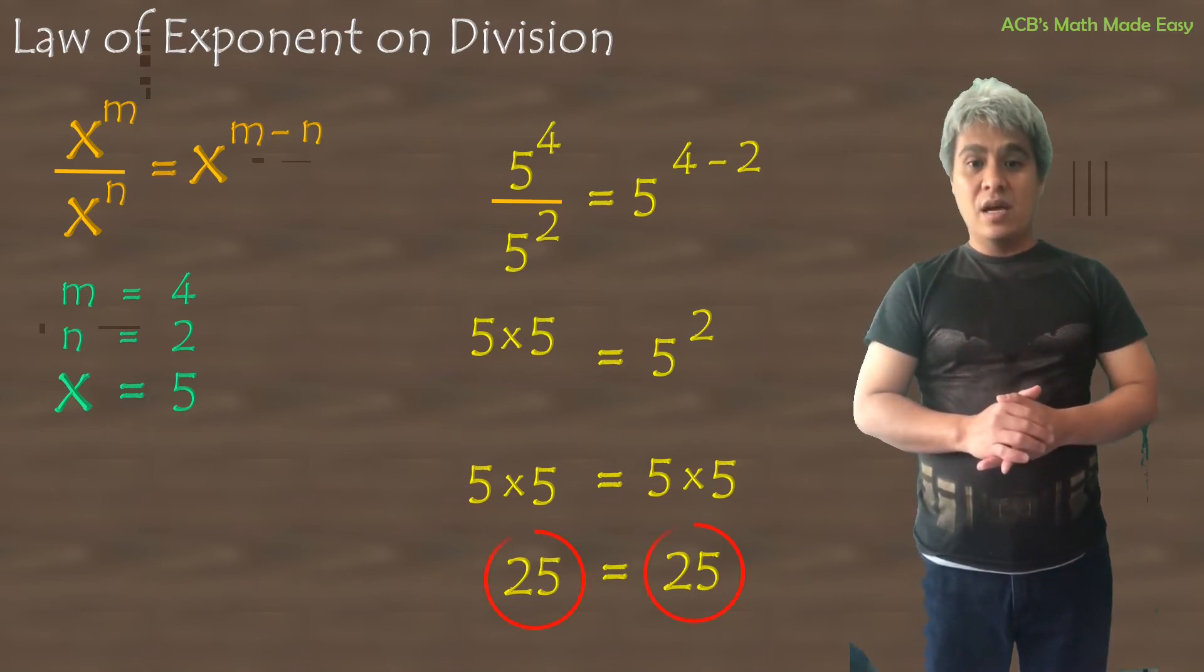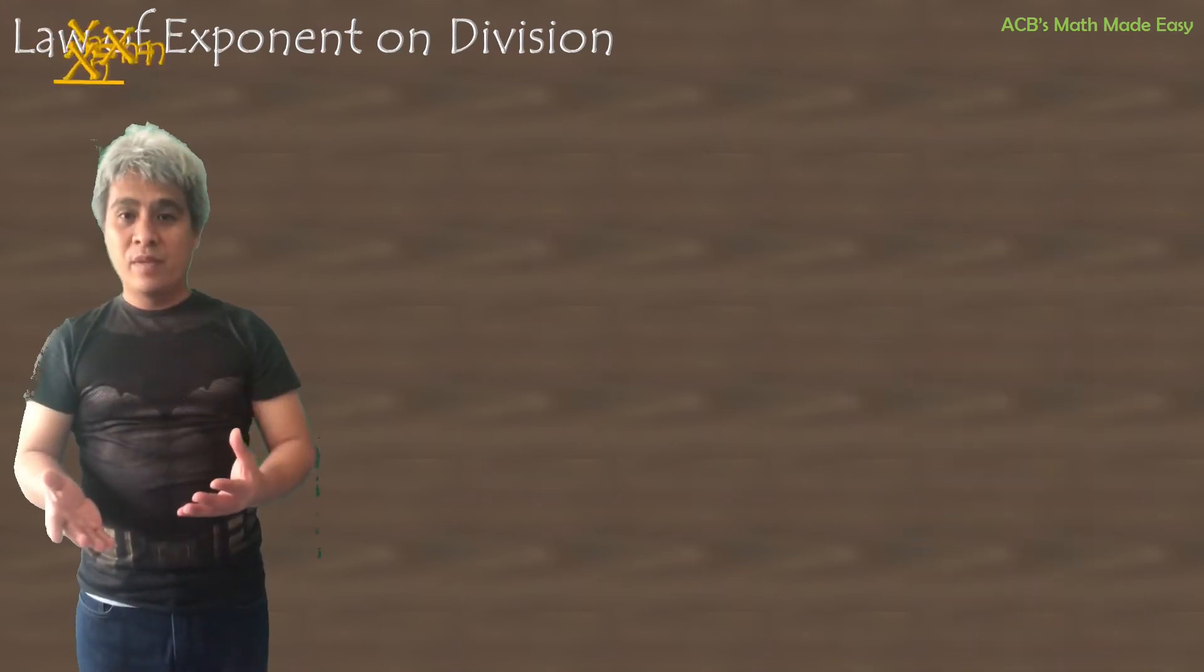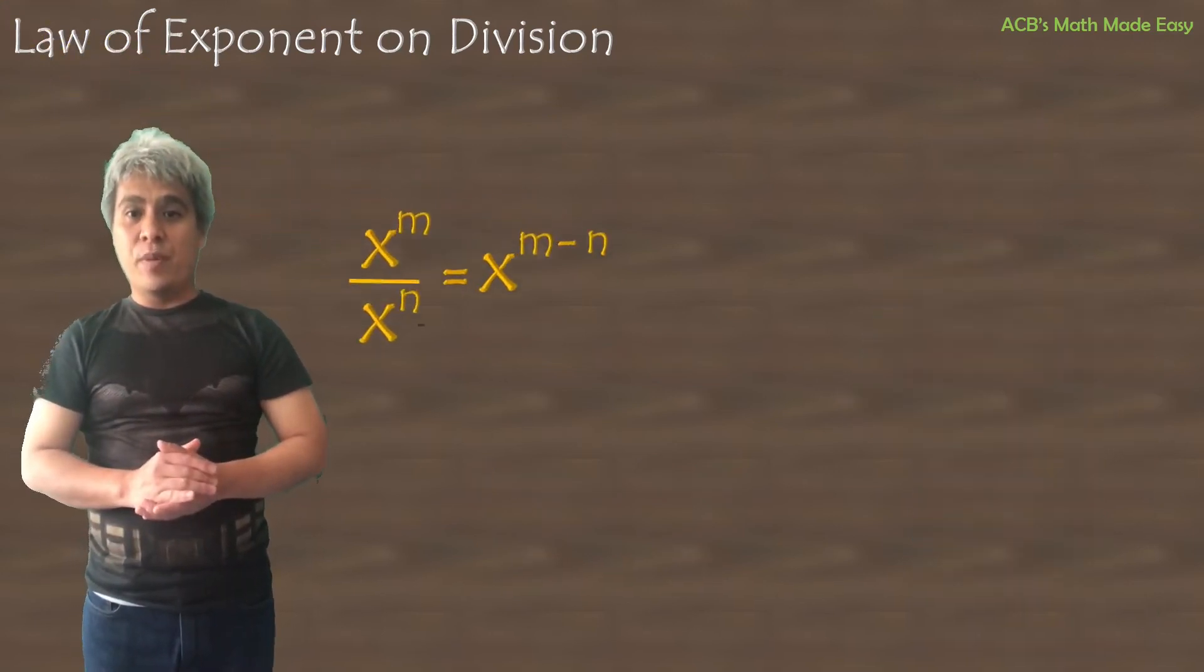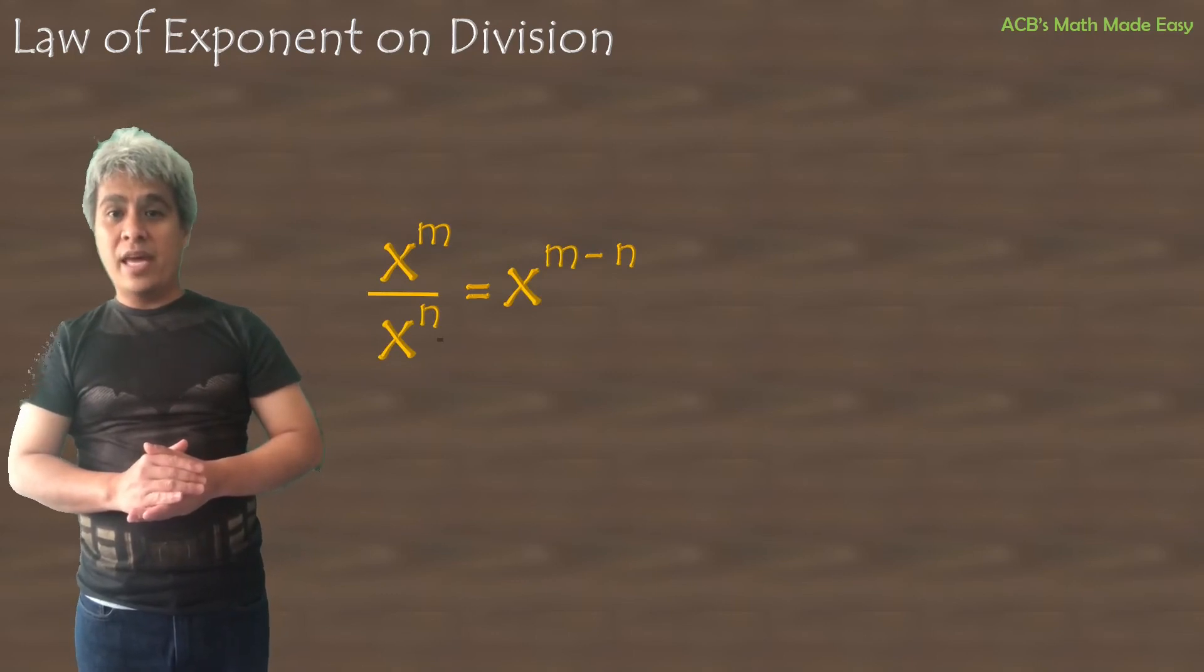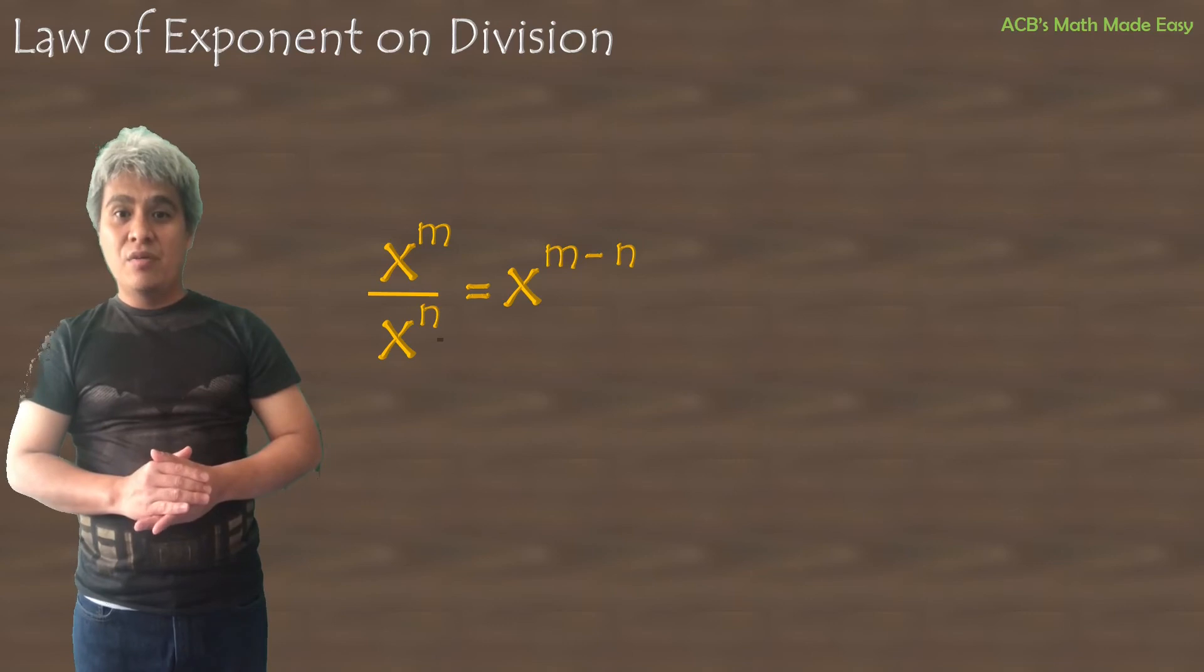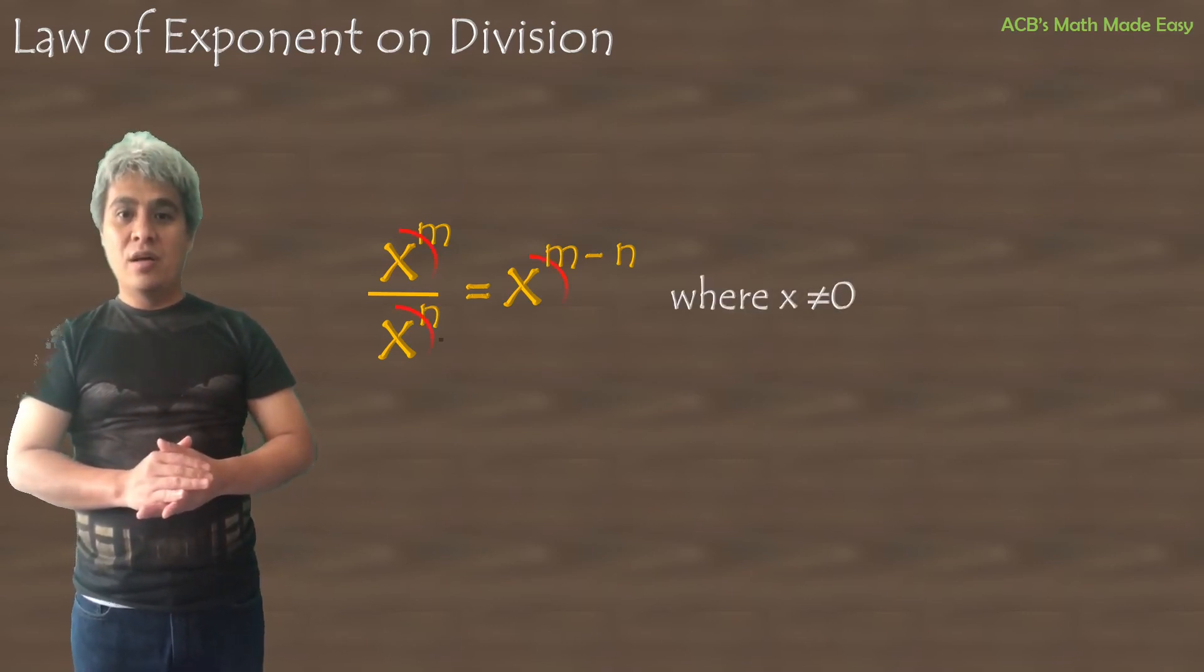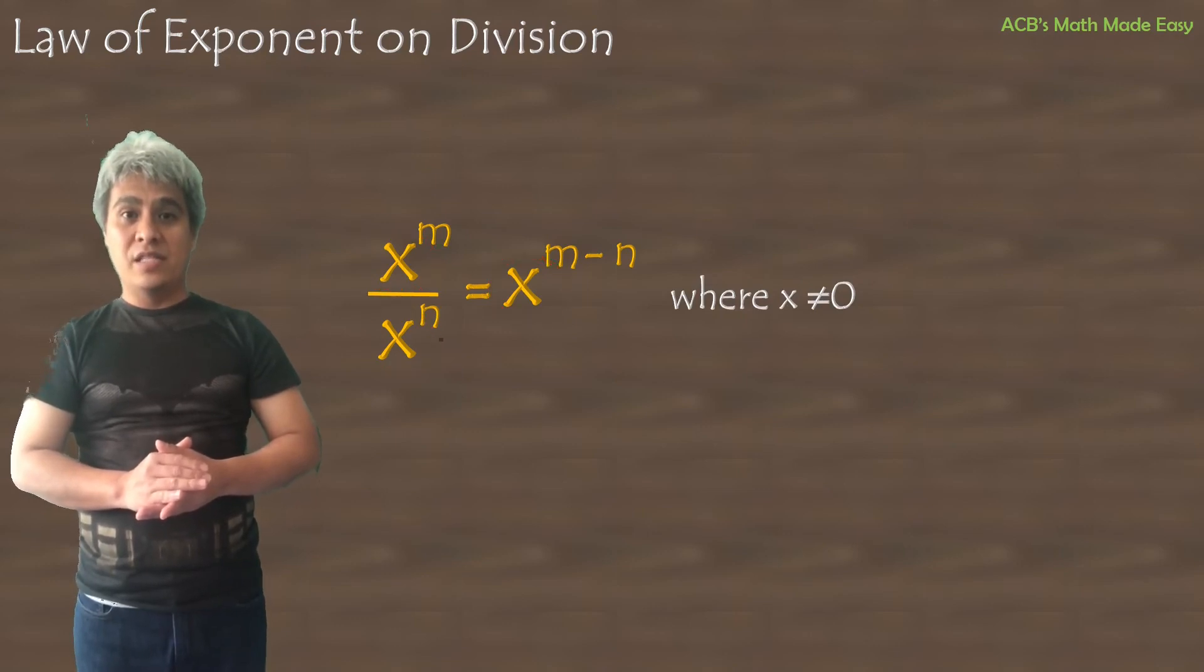As you can see, our answers are both 25. We have proven that x raised to the power of m divided by x raised to the power of n equals x raised to the power of m minus n, as long as the value of x is not 0.